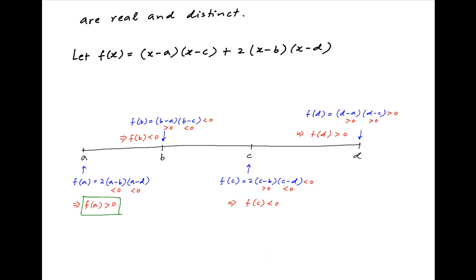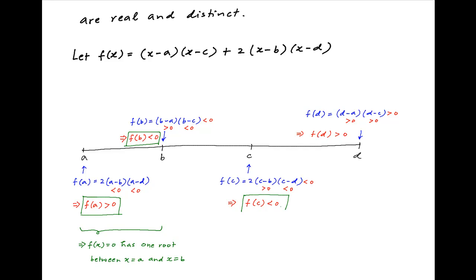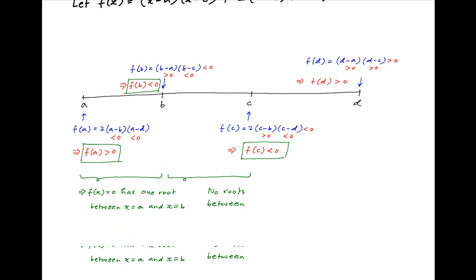Clearly, the function changes sign between x equal to a and x equal to b. Therefore, the equation f(x) equal to 0 will have a root between these two points. Note that the value of the function is negative at both x equal to b and x equal to c. Therefore, there are no roots of f(x) equal to 0 between these two points.